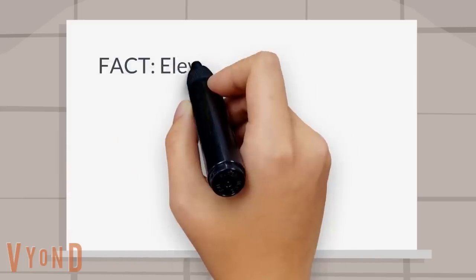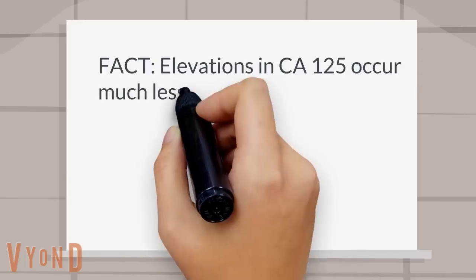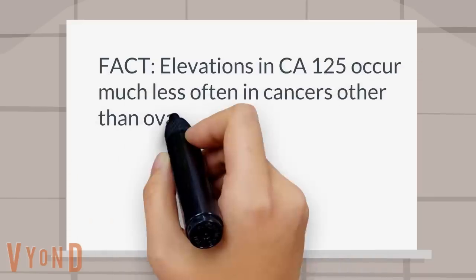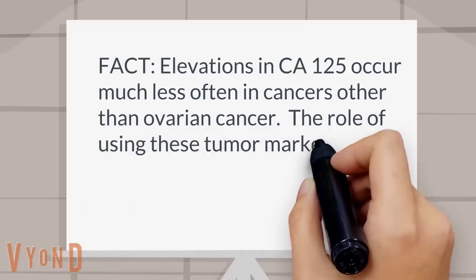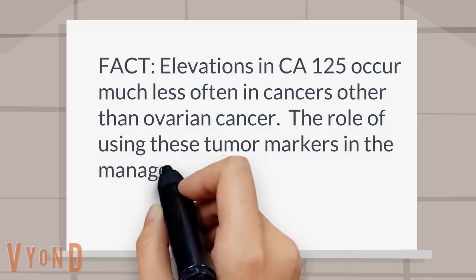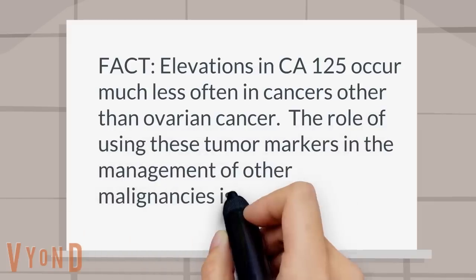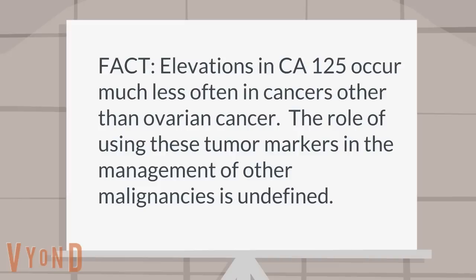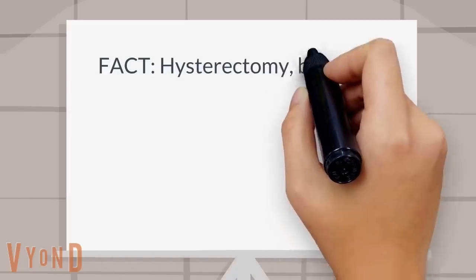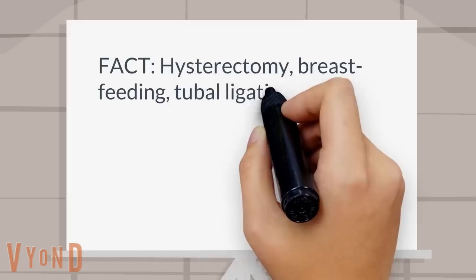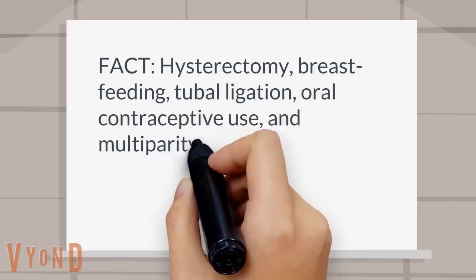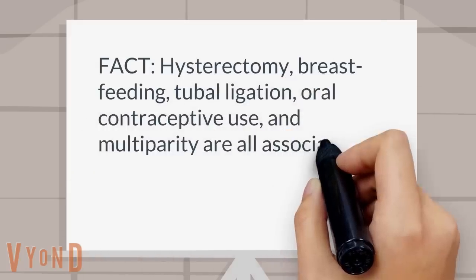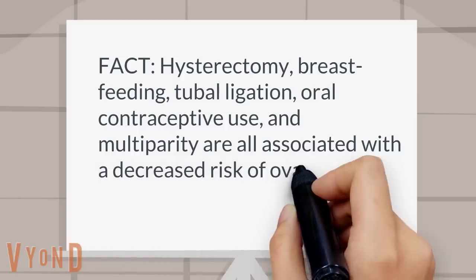Fact: Elevations in CA-125 occur much less often in cancers other than ovarian cancer. The role of using these tumor markers in the management of other malignancies is undefined. Fact: Hysterectomy, breastfeeding, tubal ligation, oral contraceptive use, and multiparity are all associated with a decreased risk of ovarian cancer.